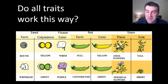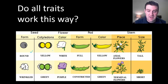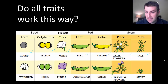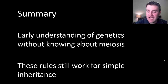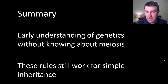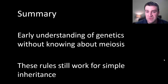Mendel didn't just study flower color. Through painstaking research he confirmed over and over again that different traits in pea plants all worked the same way, giving him confidence that he had discovered a general pattern about how all traits work. Later scientists extended his findings to other organisms. This video is just a brief summary of how genetics got started; in a later video we'll explore Punnett squares as an application of Mendel's work.